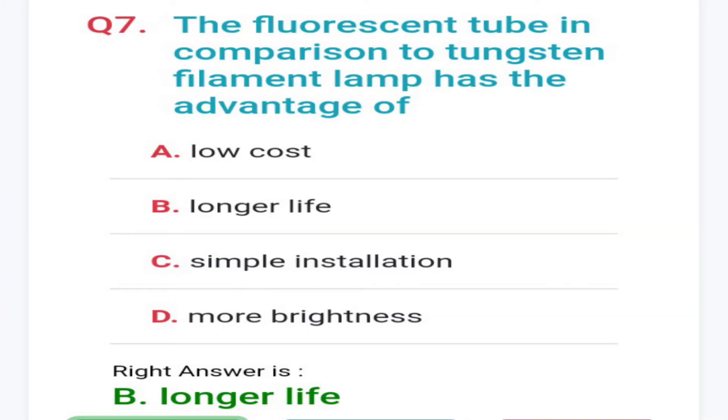Seventh: the fluorescent tube in comparison to tungsten filament lamp has the advantages of longer life.